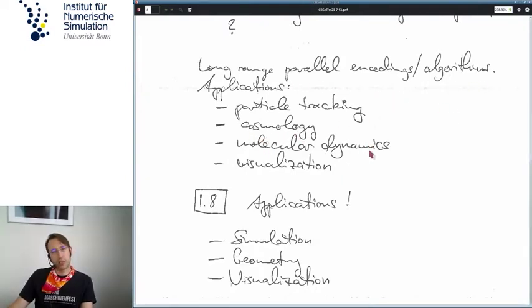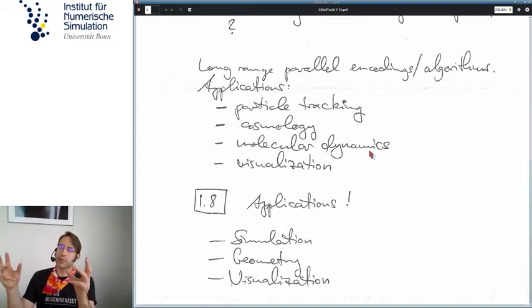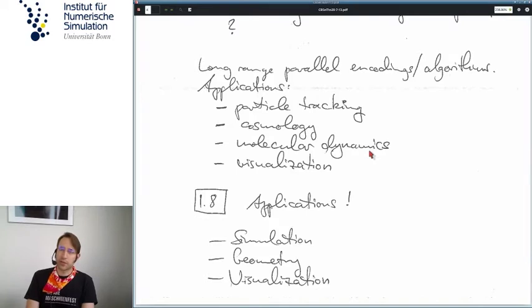And then we can develop long range algorithms, for example, to do cosmology or molecular dynamics, where you have certain molecules that need to interact with their neighbors to exchange molecular forces or electrostatic forces. Of course, visualization is the main thing where we need to search in, because we have virtual rays of light that go through the domain and we need to intersect each light ray with an element, which is a fascinating application.